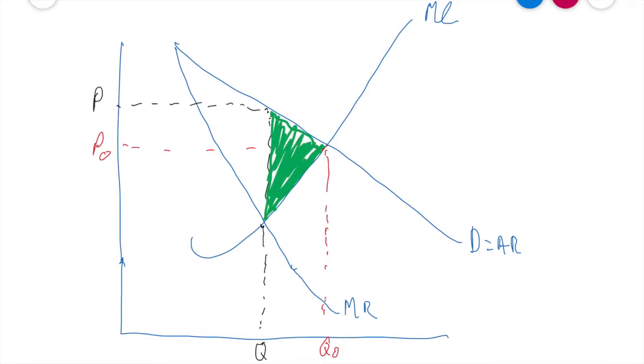And this area here then is our deadweight loss or our welfare loss for the monopolist. As you can see, it's a nice little triangle there. Take a moment, pause this and have a look, and make sure you fully understand where deadweight loss is.